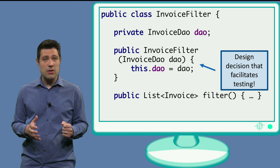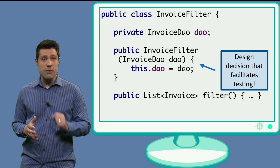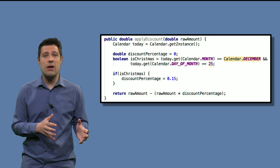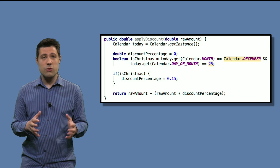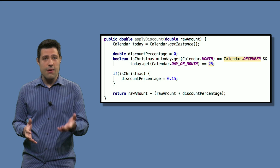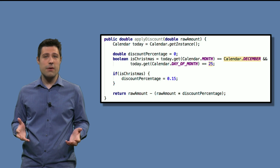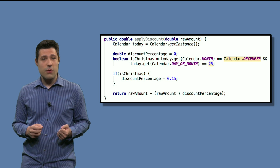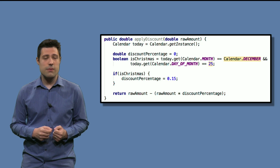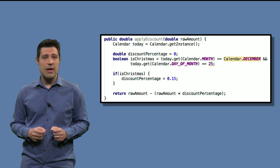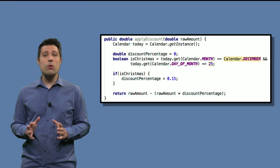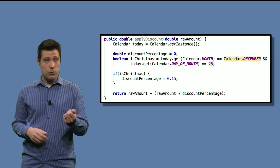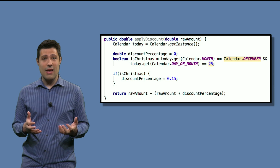To get a complete example again: in the previous weeks, we had the problem where we wanted to give a specific discount if it was Christmas Day. I have an example of an implementation here. If it's Christmas, then we give 15% discount. If it's not Christmas, there's no discount. Pause this video and see how I implemented it, and please focus on the way I'm getting today's date — in other words, how I am using the Calendar class.